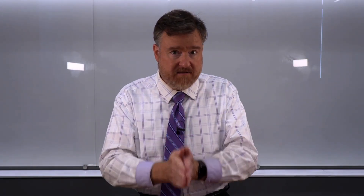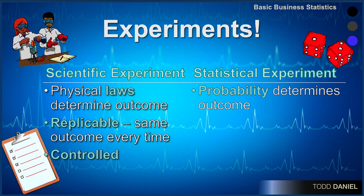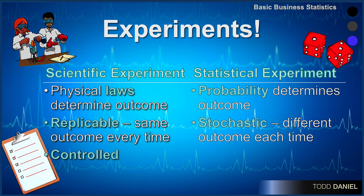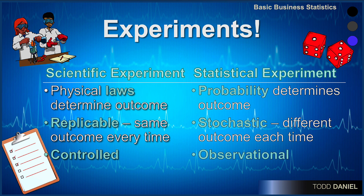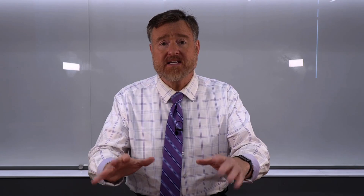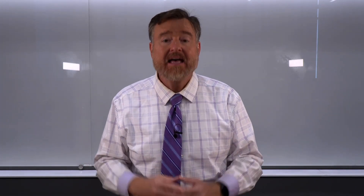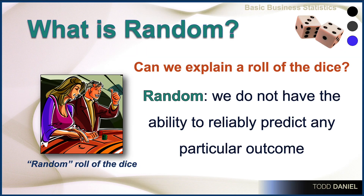Now, these are the qualities of a scientific experiment. What about a statistical experiment? In a statistical experiment, probability rather than physical laws determines the outcome. The outcome is not replicable — it is stochastic, a different outcome each time. Every time you roll the dice, you get a different outcome. And the outcome is observational as opposed to being controlled. We don't know what's going to happen. Even as the experimenters, we have no idea of the outcome of the dice any better than anyone else participating. That's what makes this a statistical experiment — it is the randomness in which the outcome is never certain.